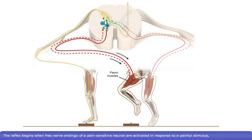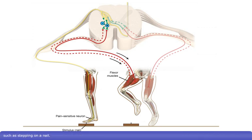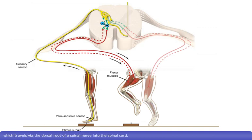The reflex begins when free nerve endings of a pain-sensitive neuron are activated in response to a painful stimulus, such as stepping on a nail. This fires an action potential along a somatic sensory neuron, which travels via the dorsal root of a spinal nerve into the spinal cord.